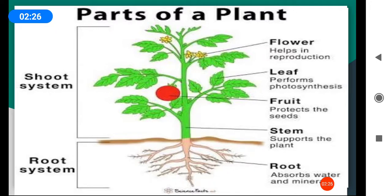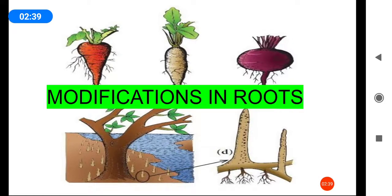Flowers and fruits are the reproductive organs in the plants. Other than these normal functions, plant parts modify themselves. Let us see what are the modifications in plant parts. Modifications of root: changes in the root shape and structure to perform functions other than absorption and conduction of water. Roots are modified to perform specialized functions like support, storage of food, and respiration.